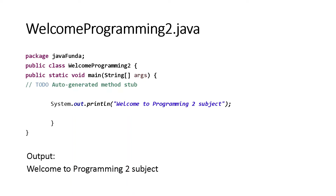It is enclosed in double quotes because it's a string, and any string that you would like to display in a console should be enclosed in double quotes. The output is 'welcome to programming subject.' Later, we will perform this in the Eclipse environment and see the actual output of the program.